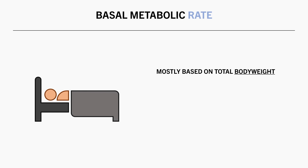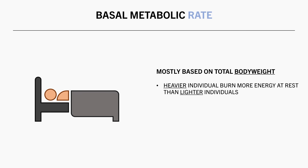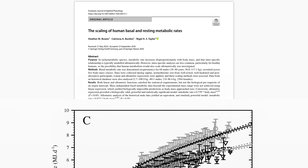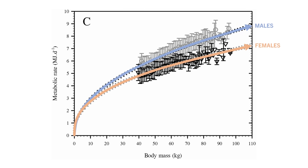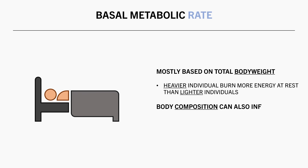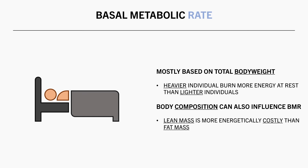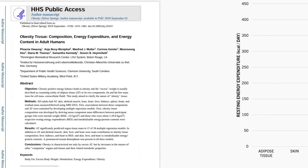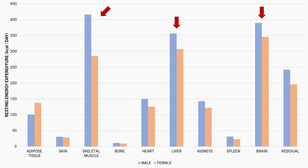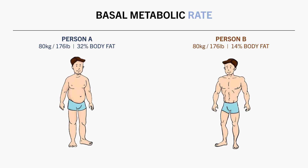Our basal metabolic rate is mostly based on total body mass — heavier individuals burn more energy at rest than lighter individuals. This study plotted the relationship between basal metabolic rate and body mass, and as expected, heavier individuals have a higher metabolic rate in both males and females. Furthermore, body composition also influences metabolic rate: lean tissue like muscle, bone, and organs are more energetically expensive than body fat per gram. This means two individuals at the same body weight could have slightly different energy expenditures — someone with more lean mass will usually have a slightly higher metabolic rate.